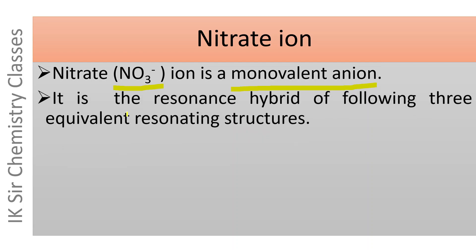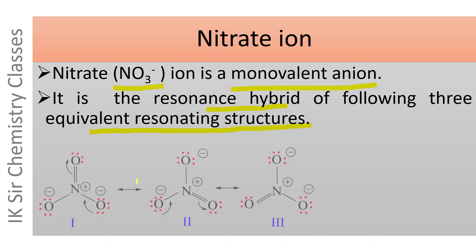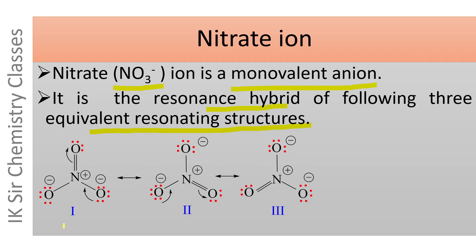It is the resonance hybrid of the following three equivalent resonating structures. Three resonating structures for nitrate ion are given below, which are equivalent. Structures one, two, and three are resonating structures for NO3 minus ion.